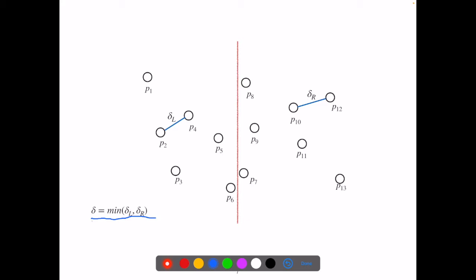Now we need to determine if there are two points, one on each side of the dividing line, that have a distance less than delta from each other. First, we can eliminate all the points that have distance more than delta from the dividing line,